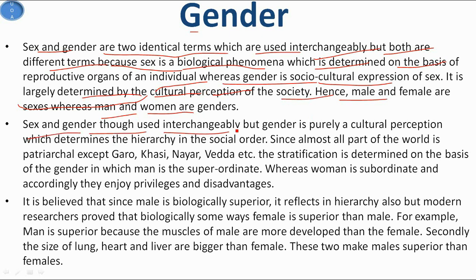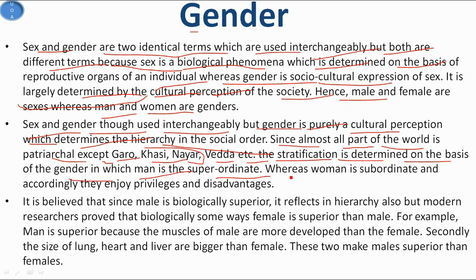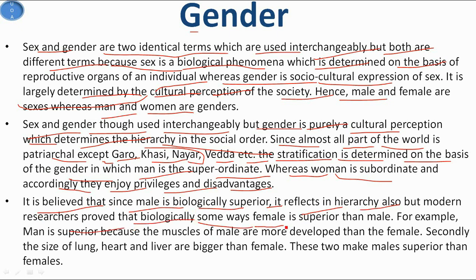Sex and gender are used interchangeably, but gender is purely a cultural perception which determines the hierarchy in the social order. Since almost all parts of the world are patriarchal - except some tribes like Garo, Khasi, Nayar in India and Veda in Sri Lanka - stratification is determined on the basis of gender in which men are the superordinate whereas women are subordinate, and accordingly they enjoy privileges and disadvantages.